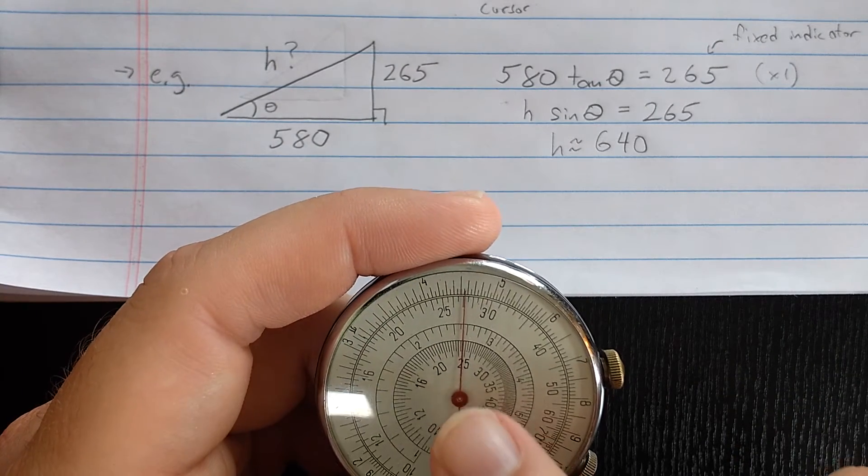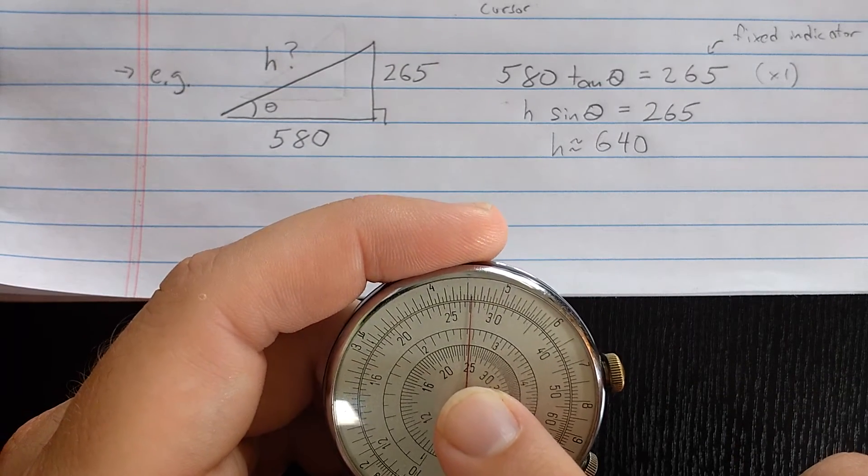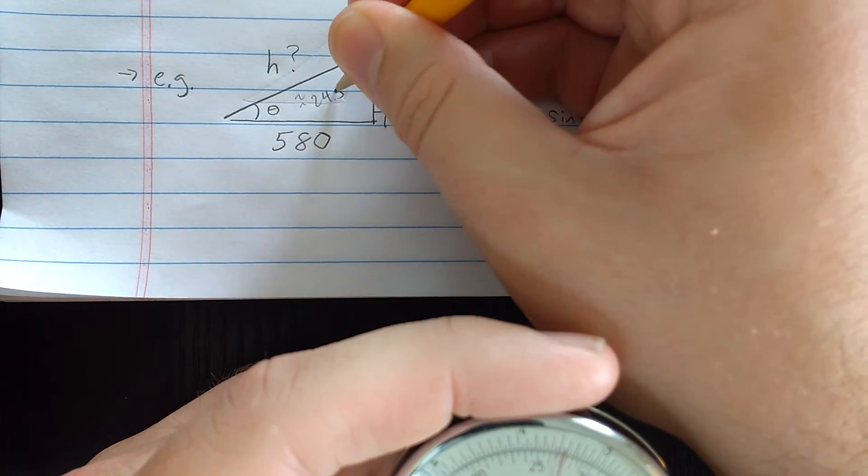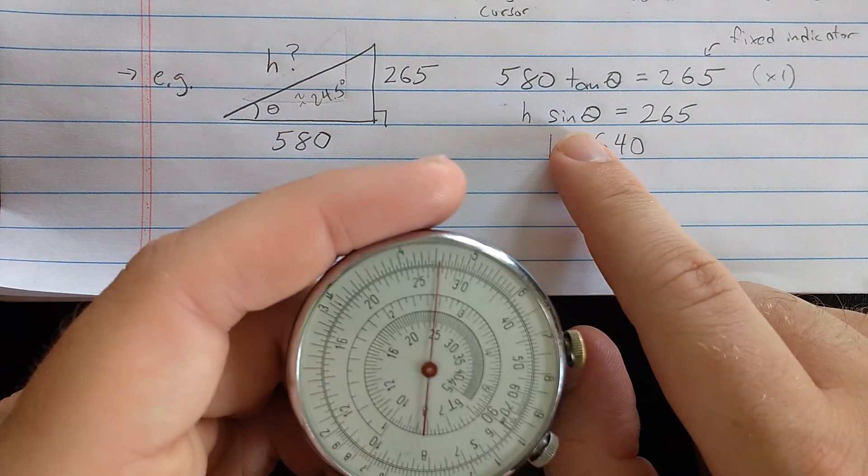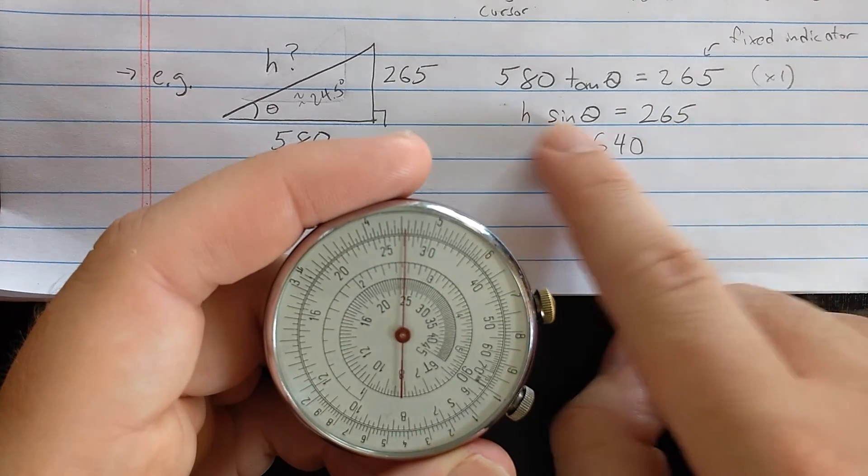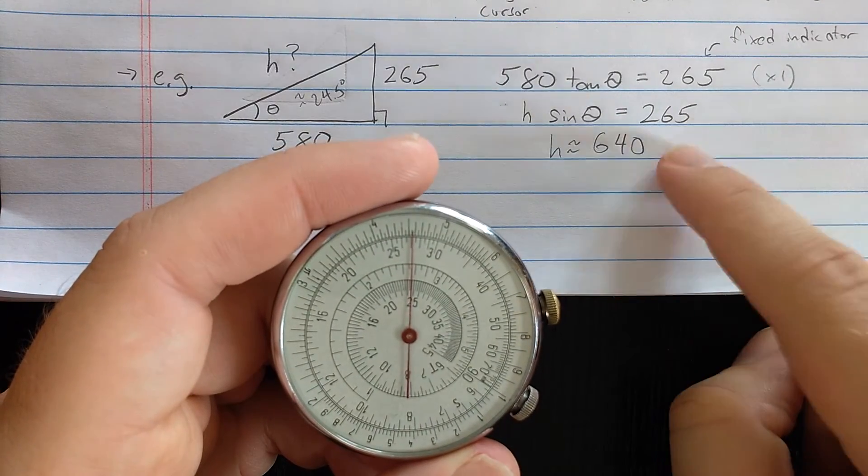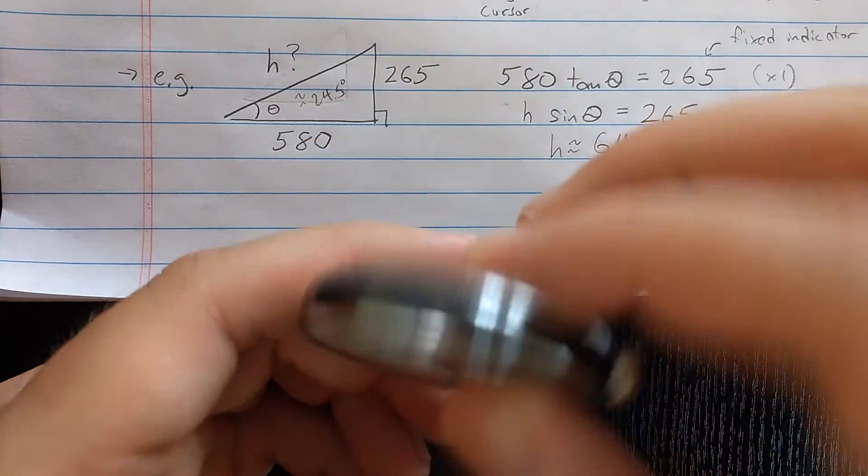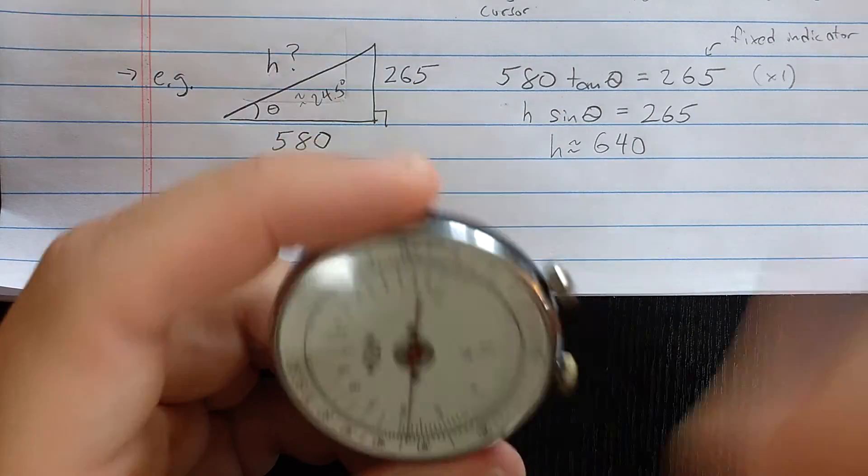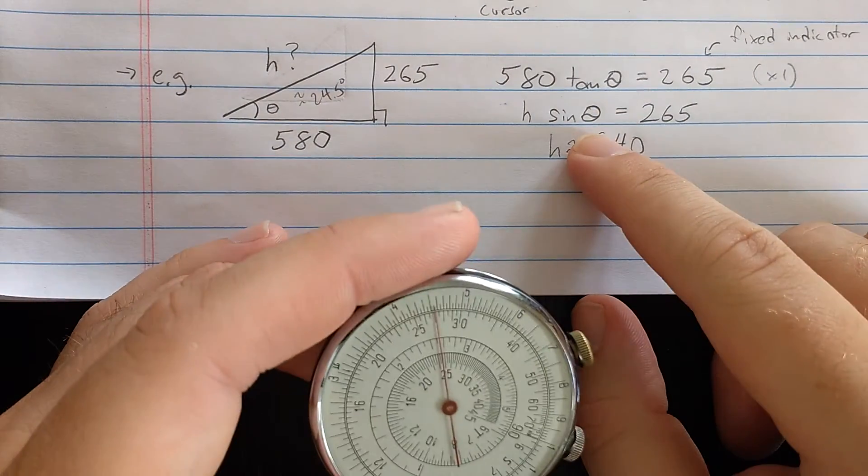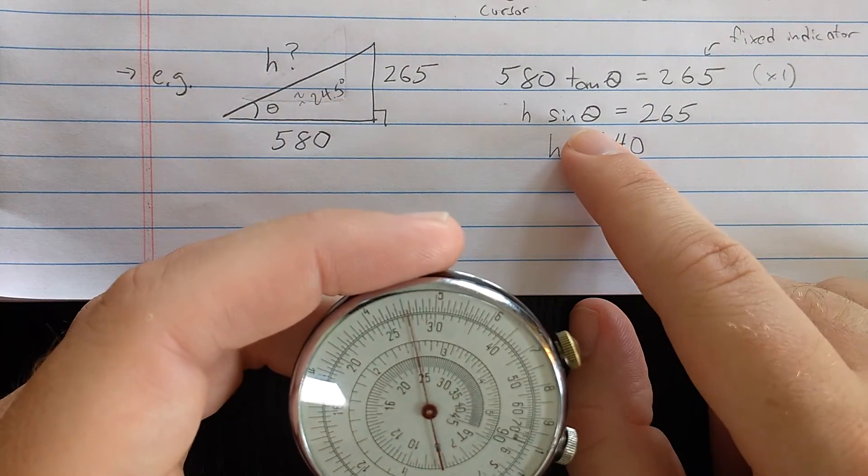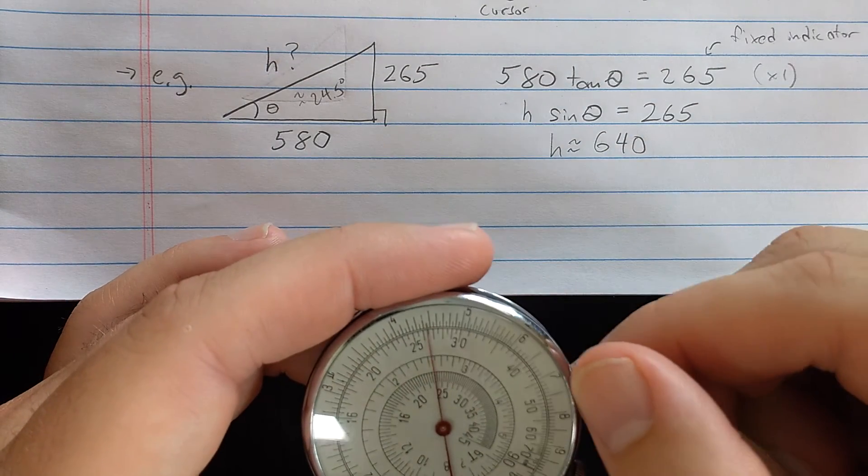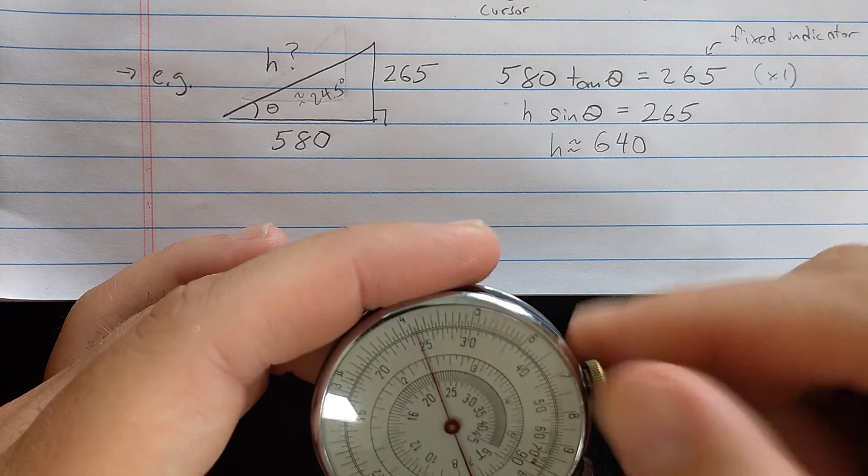Then on the other side underneath the cursor should be tangent theta. So if I look at the tangent scale, I see the angle there is about 24 and a half. You don't need to write this down. But what I want to do is I'm going to solve this second inverse proportion. Remember that I moved the needle, I haven't moved the slide, so the indicator is still aligned with the 265.